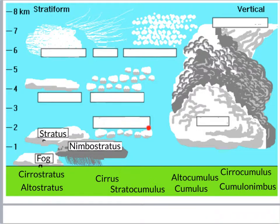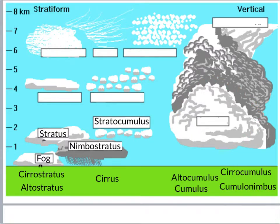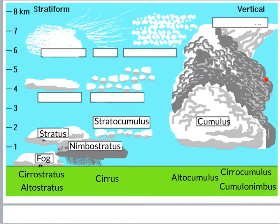Next up, these little puffy ones — notice they are forming a line, so that would be stratocumulus. This next one in the foreground has some vertical development and is not raining, so that would be a cumulus cloud. The one just behind it has big vertical development with an anvil on top — that huge, dark gray cloud is a cumulonimbus cloud, your big thunderstorm clouds.